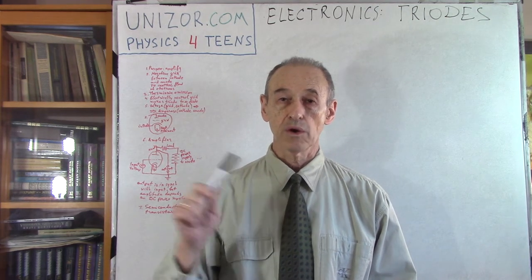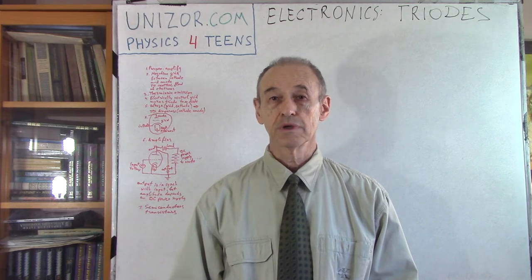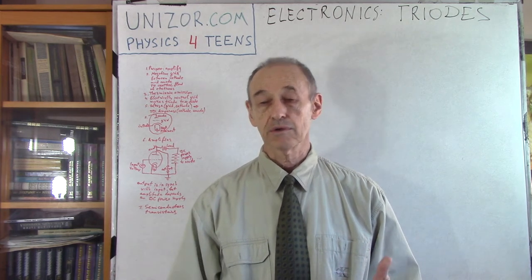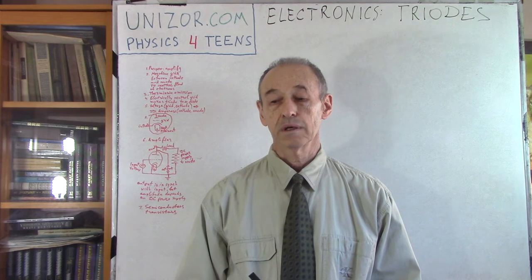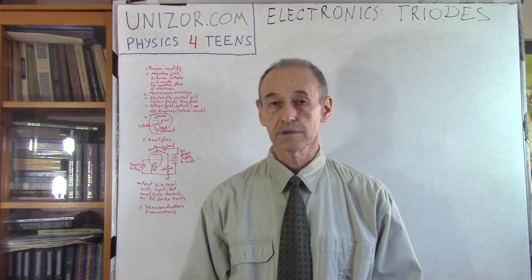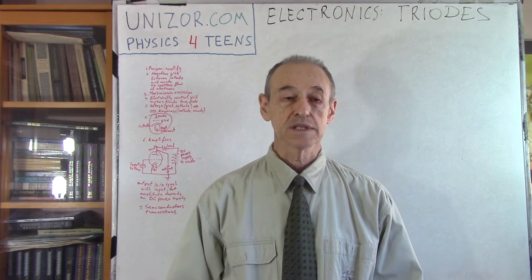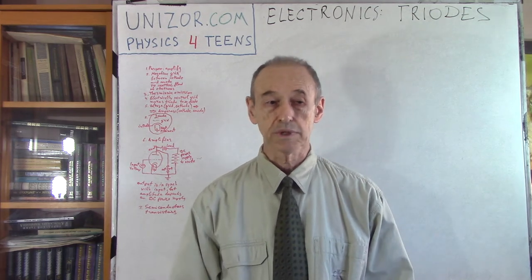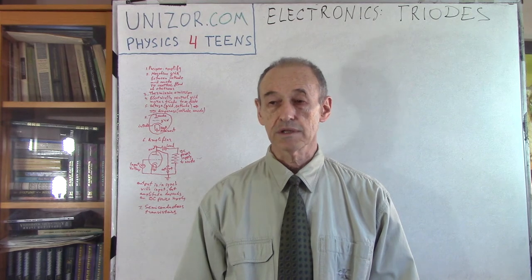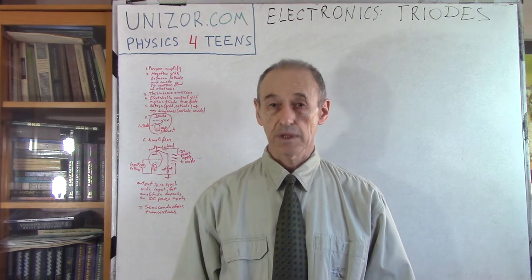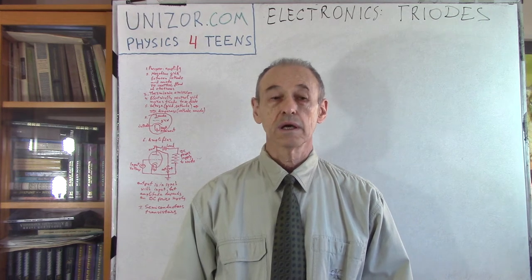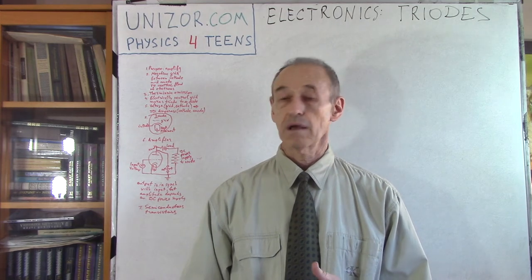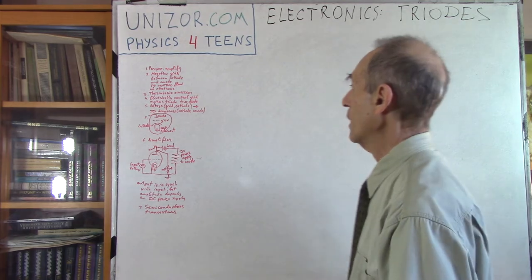I will use the old-fashioned vacuum tube construction to demonstrate the principle. Contemporary triodes and diodes are produced differently using semiconductor integrated schemas, but the most important is the principle, and that's the purpose of the whole course. The principle is very well demonstrated when we examine the very first triodes based on vacuum tubes.